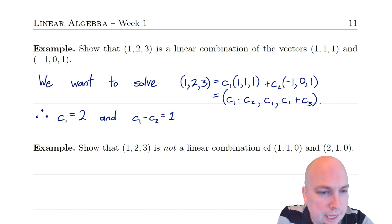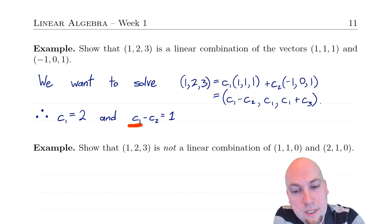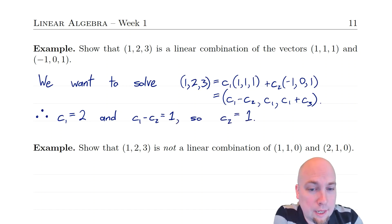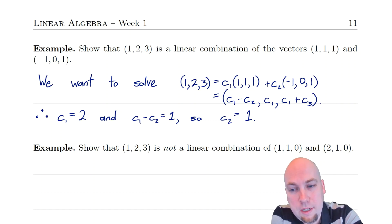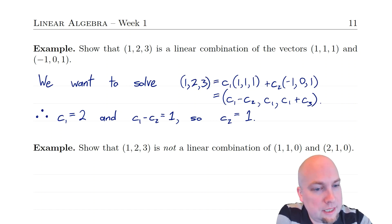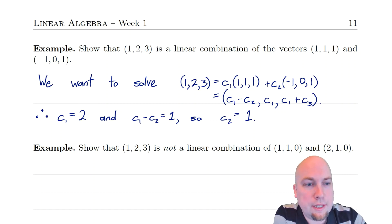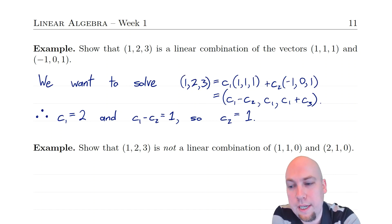Now I'll look at one of the other entries. I also need c1 minus c2 to equal 1. Since I already know c1 equals 2, I can plug that in: 2 minus c2 equals 1, so c2 has to equal 1. There's one more thing to verify — I need to check that the third entry works as well. Plugging these into the third entry, c1 plus c2 is 2 plus 1, which equals 3. So this really is a solution: plugging in c1=2 and c2=1 gives us the vector [1,2,3].